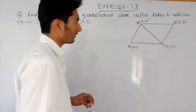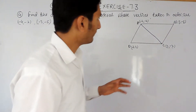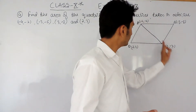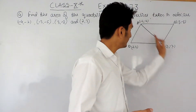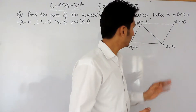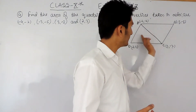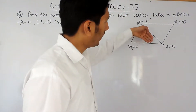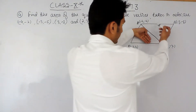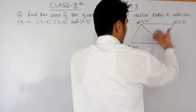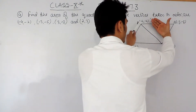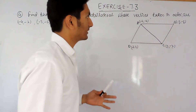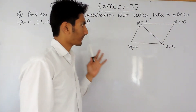What we have done is joined opposite vertices A and C, forming a diagonal. This diagonal divides the quadrilateral into two parts, and both parts are triangles. Now I can find the area of each triangle using the formula, and adding those two areas I will get the area of the complete quadrilateral.